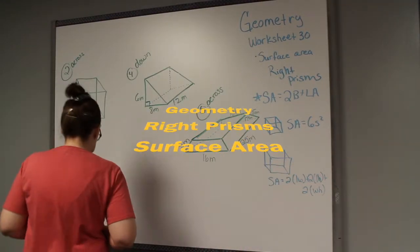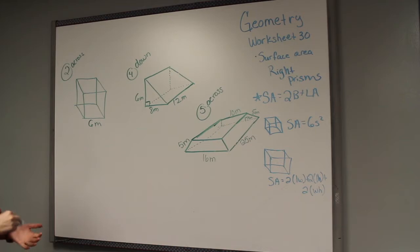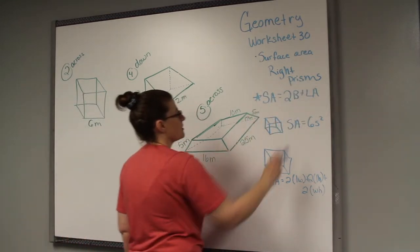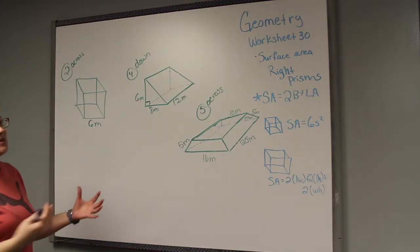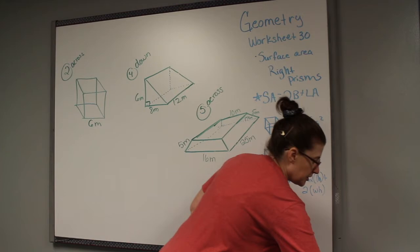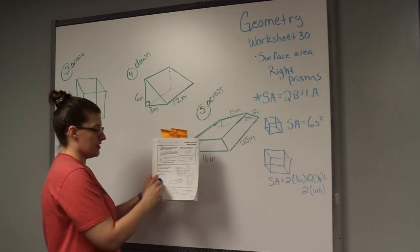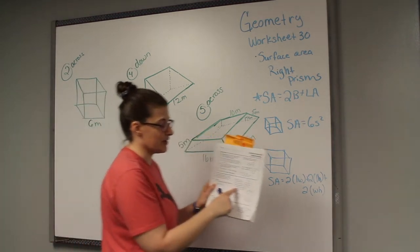Welcome back to geometry class. Today we are still dealing with our surface area section — apologies for the hiccups. This is a continuation of the last video. If you're in my class, we're on worksheet 30 and we are discussing surface area of right prisms. Some problems on the worksheet have shapes drawn and some are just written out, and the answers go into a crossword puzzle.